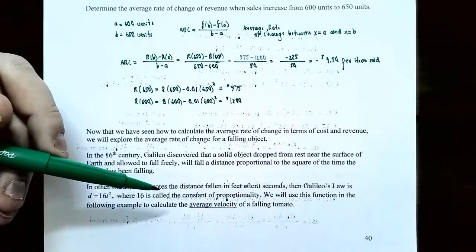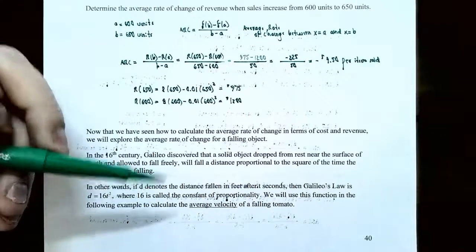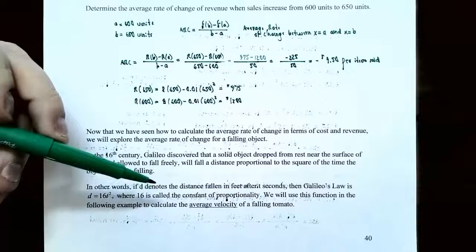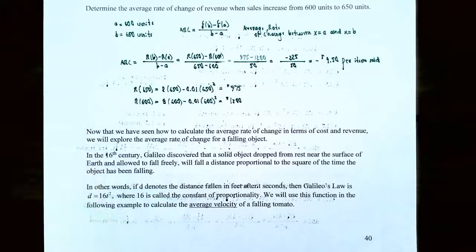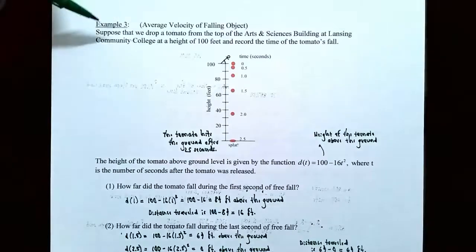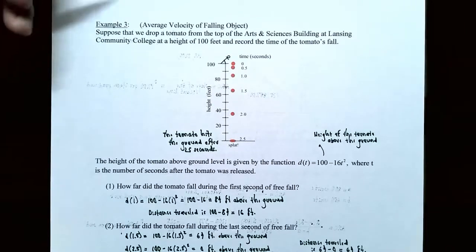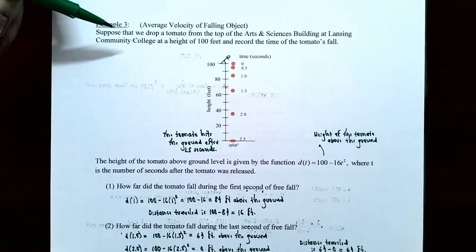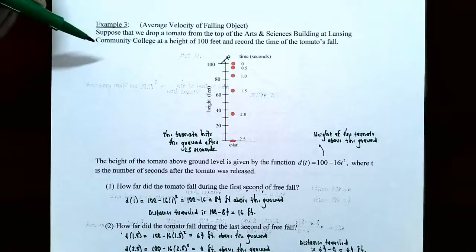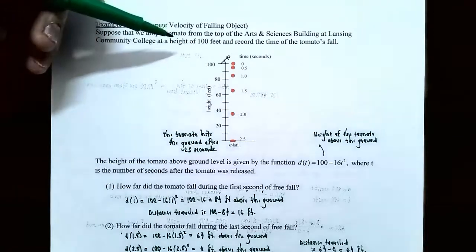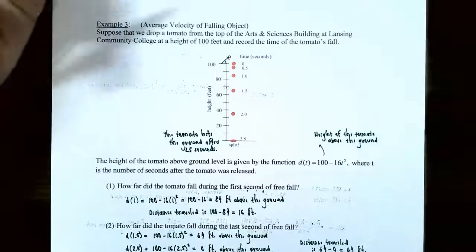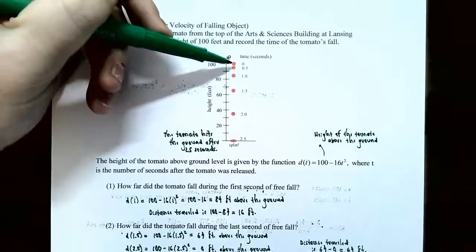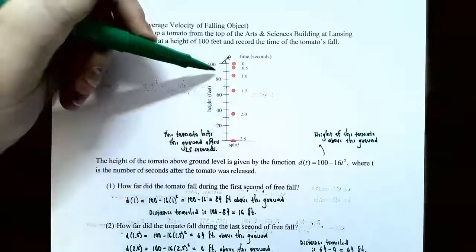Example three: average velocity of a falling object. Suppose we drop a tomato from the top of the arts and sciences building at Lansing Community College at a height of 100 feet and record the time of the fall. The height of the tomato above the ground is given by a variation of Galileo's law: the height equals 100 subtract 16T squared, where T is the number of seconds after the tomato was released.